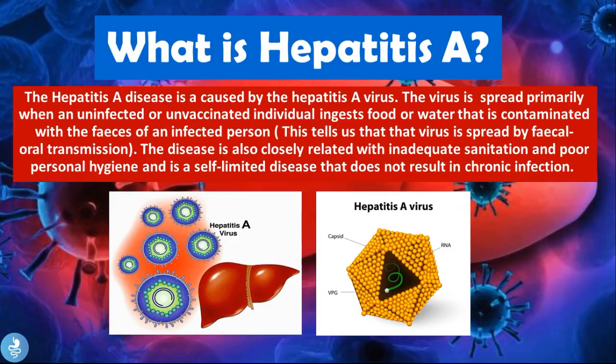So what is Hepatitis A? The Hepatitis A disease is caused by the Hepatitis A virus. The virus is spread primarily when an uninfected or unvaccinated individual ingests food or water that is contaminated with the feces of an infected person, meaning the virus is spread by fecal-oral transmission. The disease is also closely related with inadequate sanitation and poor personal hygiene, and is a self-limited disease that does not result in chronic infection.